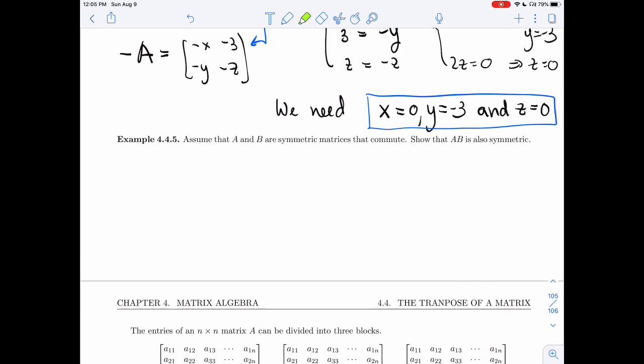All right. Last example in symmetric matrices. Example 4.4.5. I have two symmetric matrices, A and B. And I'm given that extra piece of information that they commute. I want to show that AB is also symmetric.